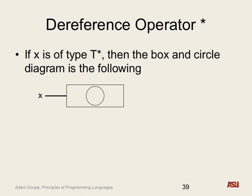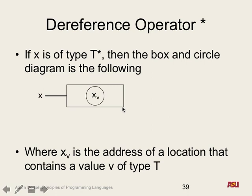If we have any type T — whether T star or T or any type — every variable has a box-circle diagram with a name bound to a location. For type-checking to be correct, the value inside a T star variable must be the address of a location that actually exists, and that location should contain a value of type T. So if x is an int star star, dereferencing it gives an int star.